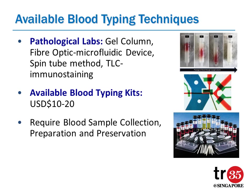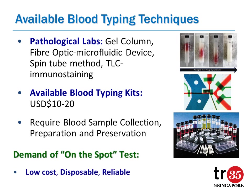There are available blood typing techniques used in pathological labs. There are also available blood typing kits for household use, which cost about 10 to 20 US dollars. However, the above techniques require blood sample collection, preparation, and preservation. Therefore, there is still a high demand for an on-the-spot blood typing test, which will be low-cost, disposable, and reliable.